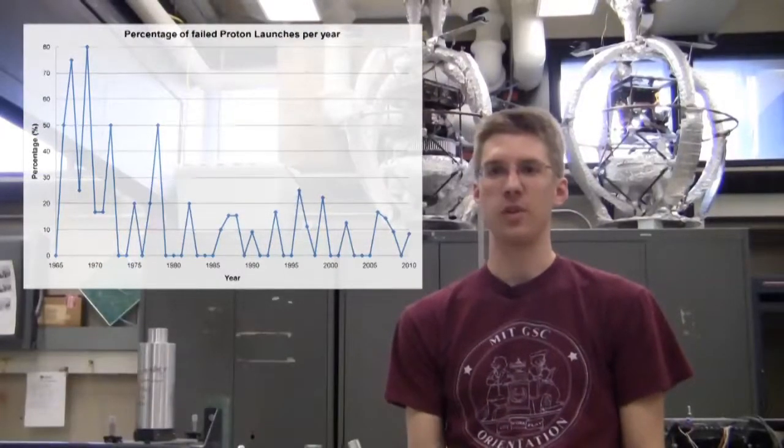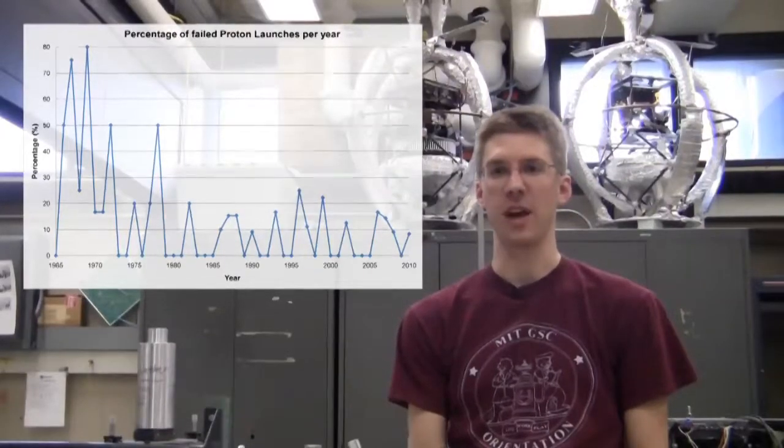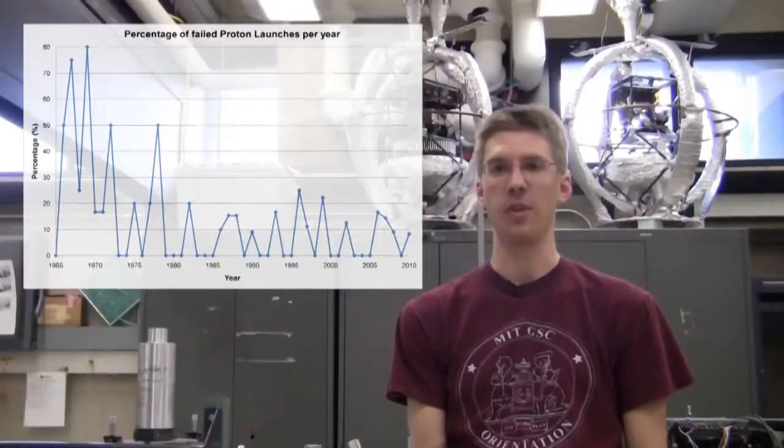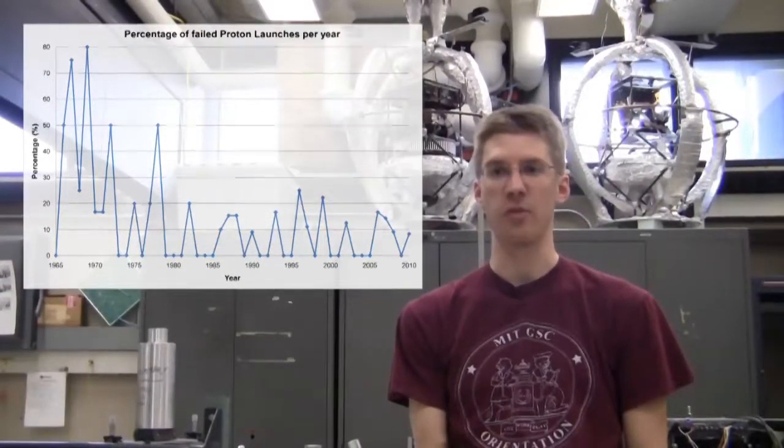For instance, let's look at data on successful Proton launches per year in a little different way. As you can see, there is an overall downward trend in Proton launch failures from 1965 until now, implying that Proton launches are much safer now than they used to be and that they will likely continue to be as safe or safer in the future.